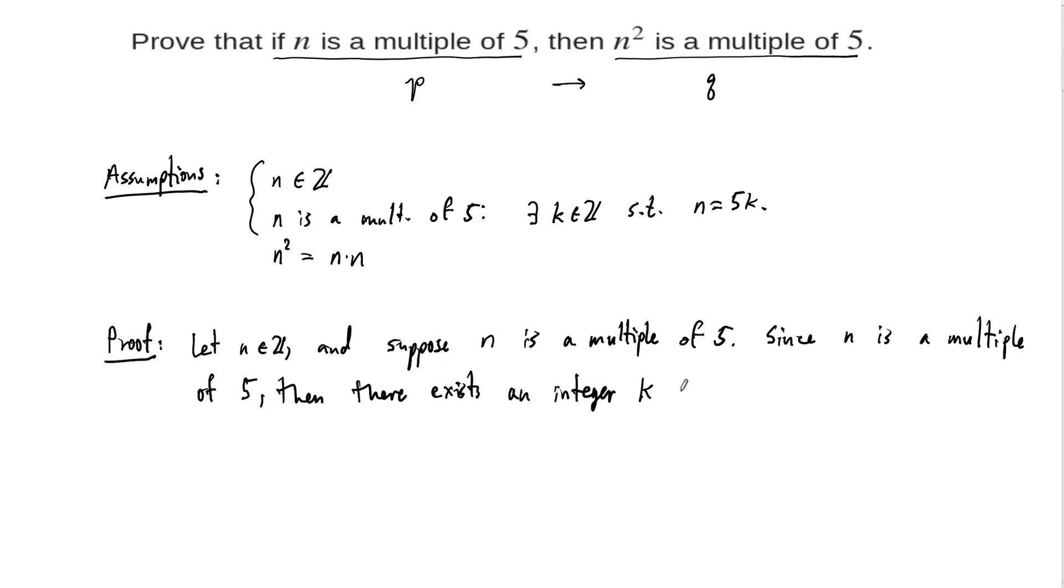So there's an integer k satisfying. You can word this in different ways, but I would recommend being very straightforward the first few proofs that you write. But this is then satisfying n equals 5 times k.